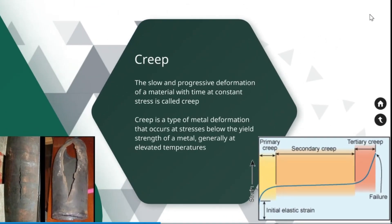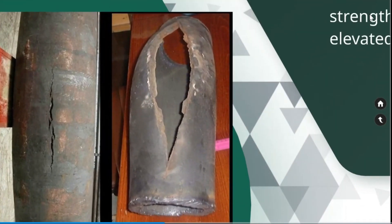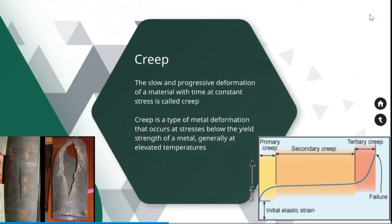The slow and progressive deformation of a material with time at constant stress is called creep. Creep is a type of mental deformation that occurs at stresses below the yield strength of the material. Generally, it will happen at elevated temperatures.